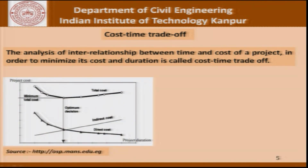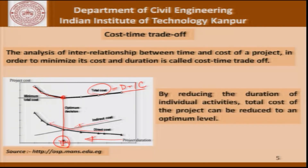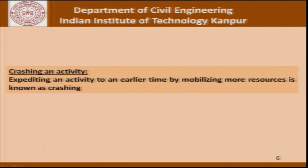This picture here is a schematic representation of what goes on. If we try to reduce the project duration, our direct cost increases but our indirect cost decreases. The total cost, which is essentially the sum of direct cost and indirect cost, will reduce up to a certain point in time and then start increasing again. By reducing the duration of individual activities, the total cost of the project can be reduced to an optimum level. Expediting an activity to an earlier time by mobilizing more resources committed to it is known as crashing.